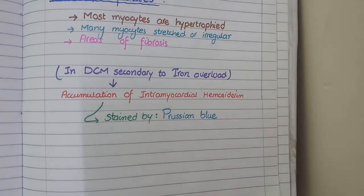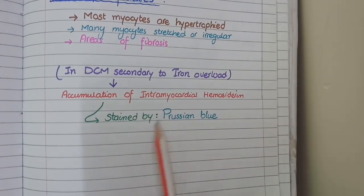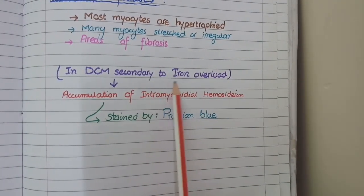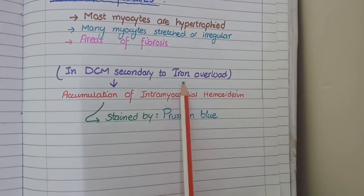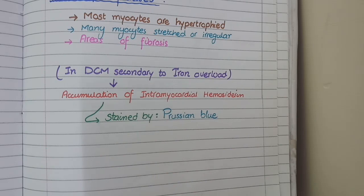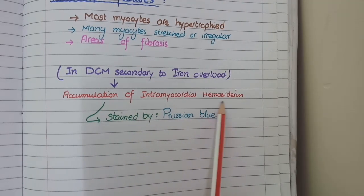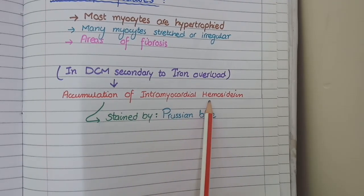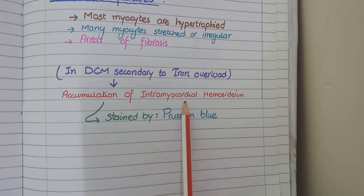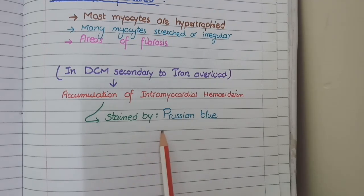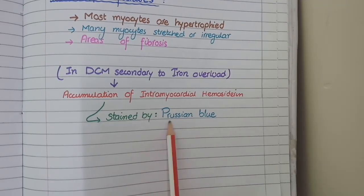In some cases of dilated cardiomyopathy that are secondary to iron overload, there is deposition of iron in myocardial cells in the form of hemosiderin. This hemosiderin can be stained by a special stain known as Prussian blue stain.